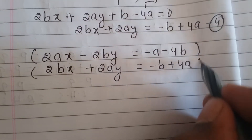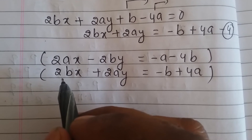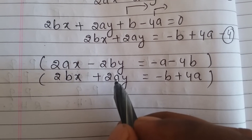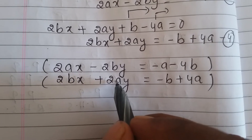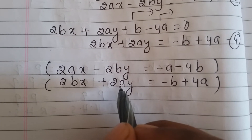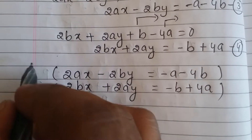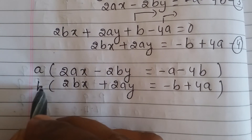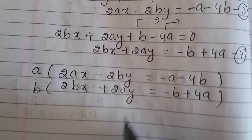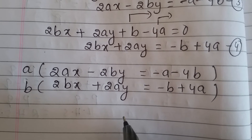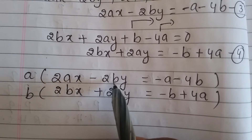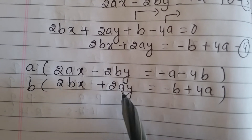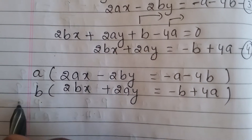We need to equate the coefficient of x or y. I am going to equate the coefficient of y. In equation three, b is there but a is not, so I multiply equation three by a. In equation four, a is there but b is not, so I multiply equation four by b.